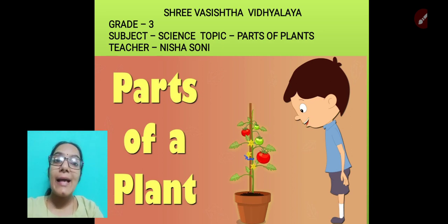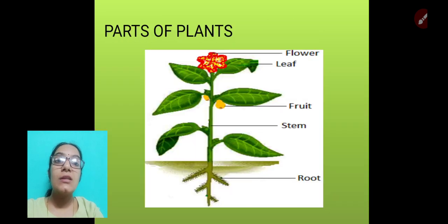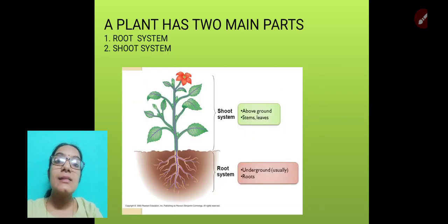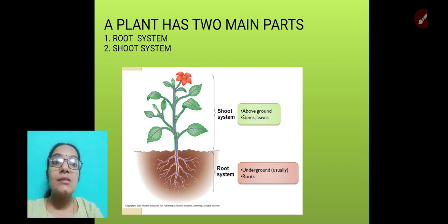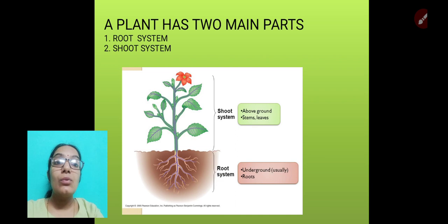As the topic goes, parts of a plant — the parts are flower, leaf, fruit, stem, and root. Today we will discuss the two main parts: the root system and the shoot system. The shoot system grows above the ground and includes stems, leaves, branches, flowers, and fruits. The root system is usually underground.